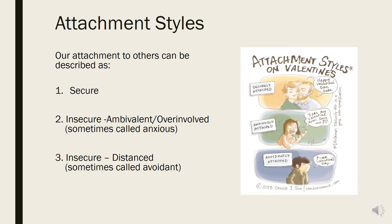Essentially, these different styles are a reflection of how secure or not we feel that people are going to be consistently there for us in a supportive way. It's important to emphasise that although these patterns do have an impact on the quality of our relationships and mental health and well-being, it's quite common across society to have insecure attachment patterns or elements of that in our experience.